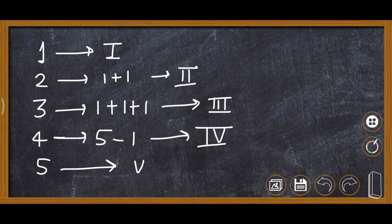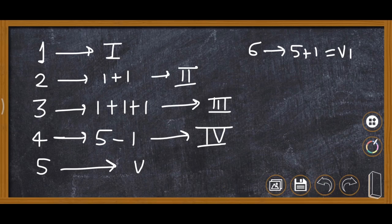For 6, we write it as 5 plus 1, so it becomes VI. When there is addition, we write the symbol after the larger one. For 7, it is 5 plus 1 plus 1, so it becomes VII.